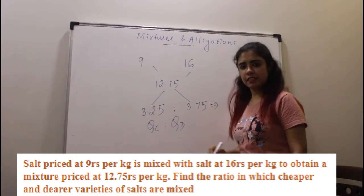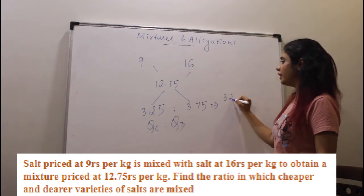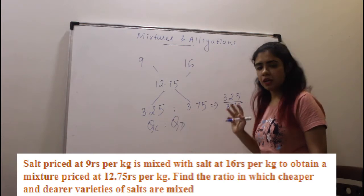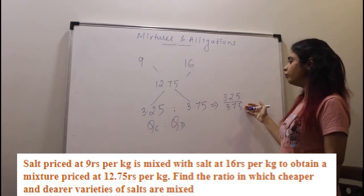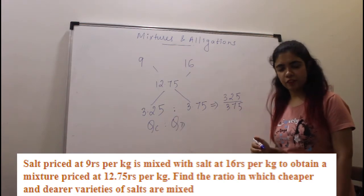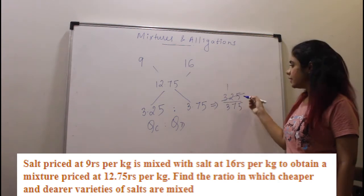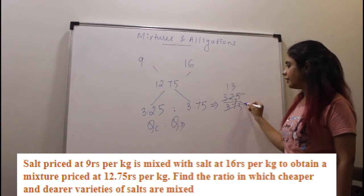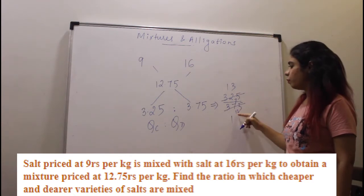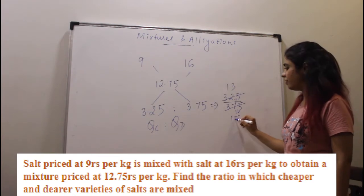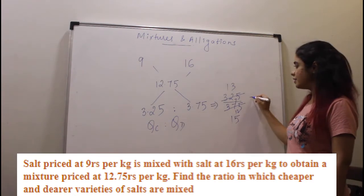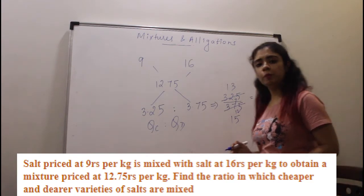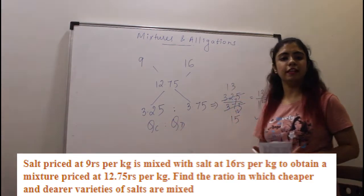If we simplify 3.25 upon 3.75 by multiplying both by 100, both are divisible by 25. So your answer becomes 13 is to 15. In this ratio, you're going to mix your cheaper and dearer salts together.